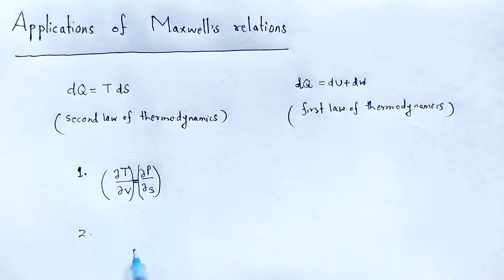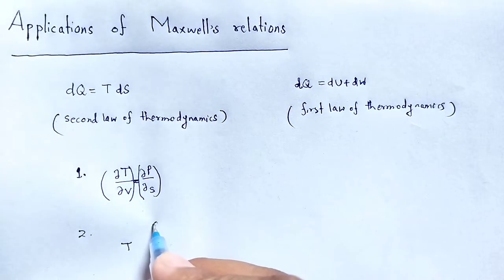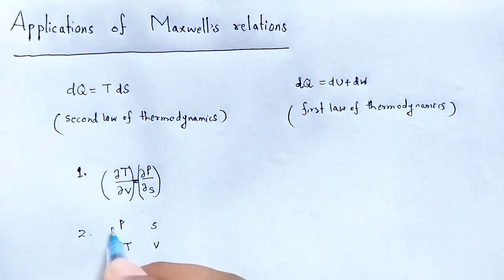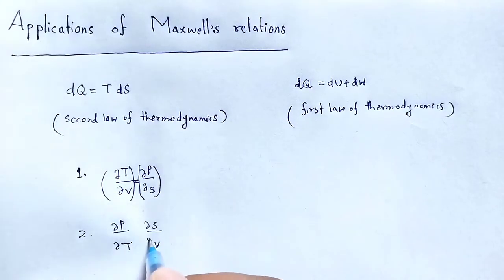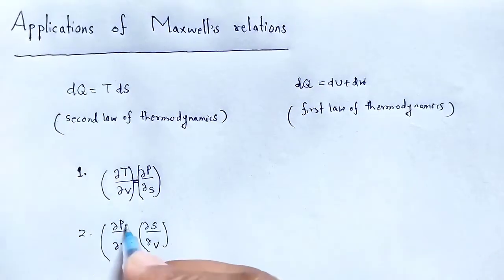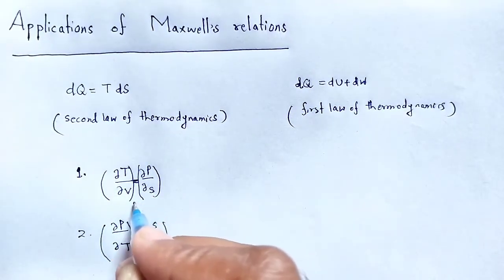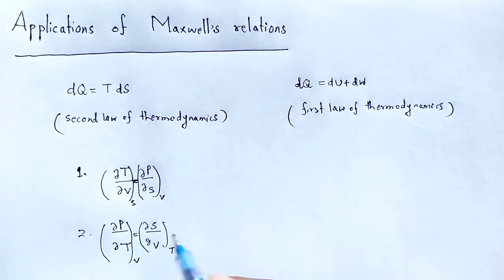The second relation: T starts here — Tendulkar Very Special Person — giving del P, del T, del S, del V. Here temperature is constant on one side and entropy and volume are held constant on the other, and V and T are equal.